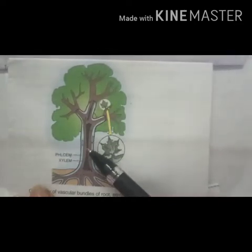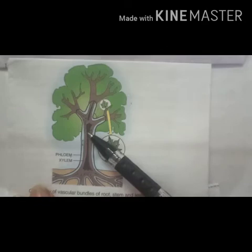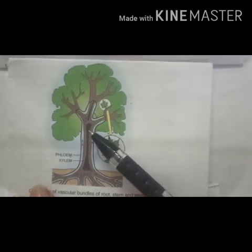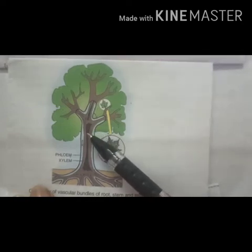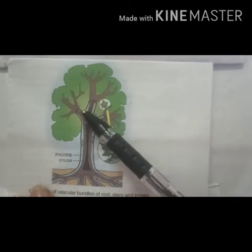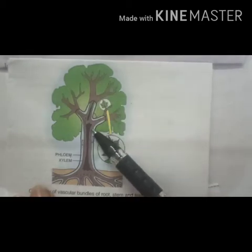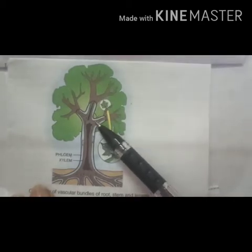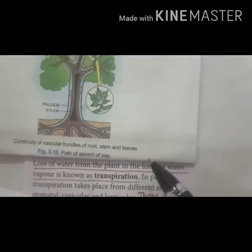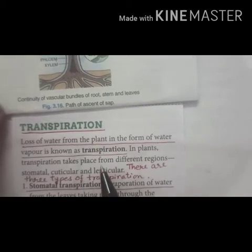Now, by the process called ascent of sap, from the absorbed water only 1 to 2 percent of water is utilized by the plants for the process of photosynthesis and other processes. But the remaining 98 to 99 percent of water is lost through the exposed parts of the plant by the process called transpiration. Transpiration is the loss of water in the form of water vapors.